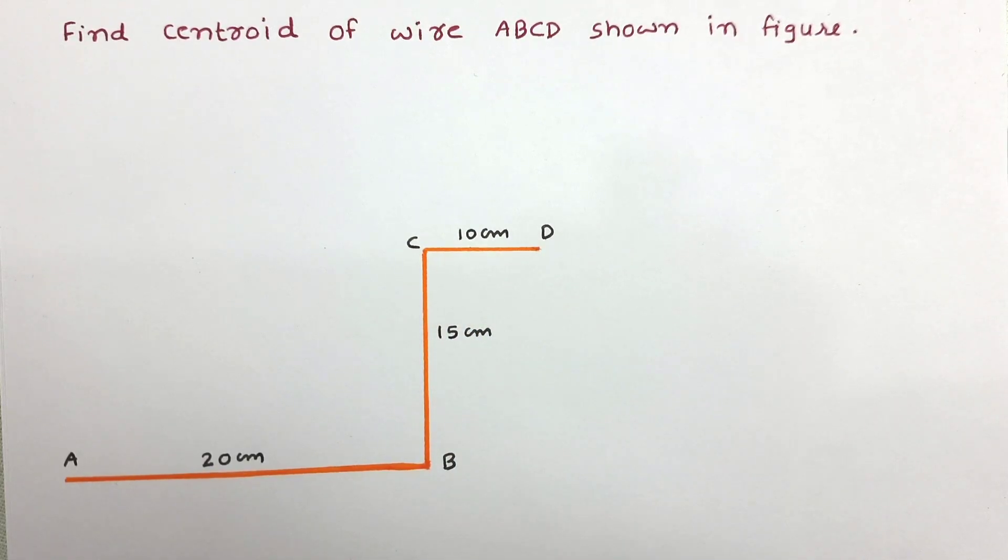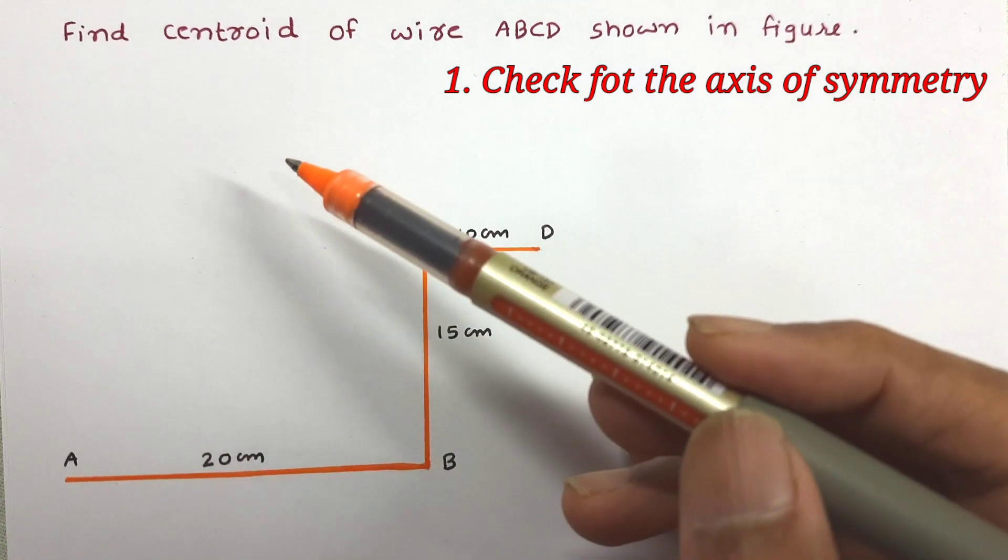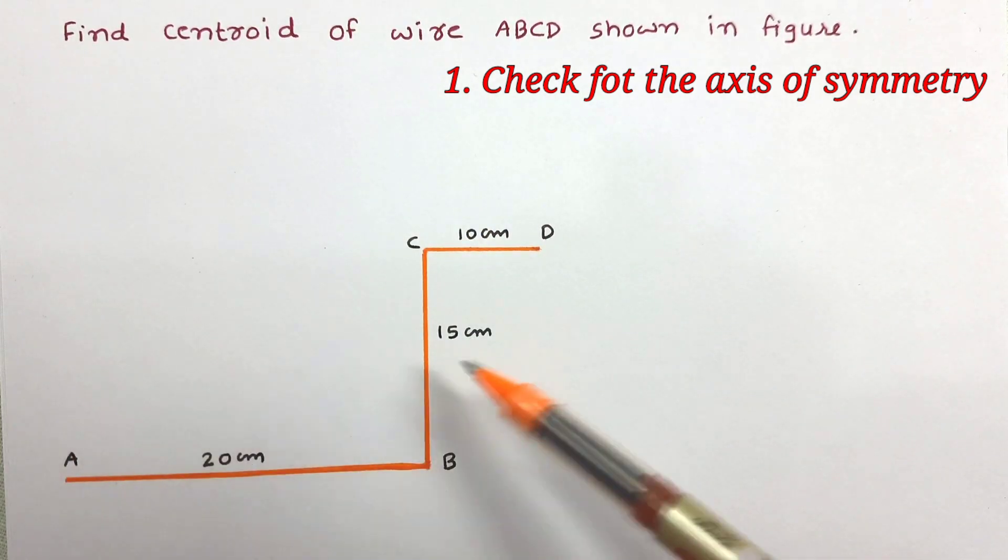Now to solve the problem of centroid, the first step is to check whether any axis of symmetry is available or not. In this figure we can see there is no axis of symmetry parallel to x or y axis. If axis of symmetry is available, we can directly determine one of the centroids of the figure. But in this case there is no axis of symmetry.